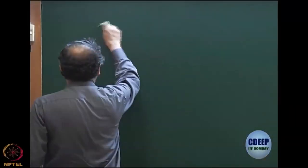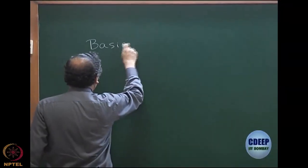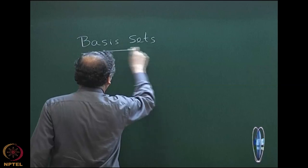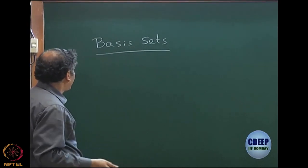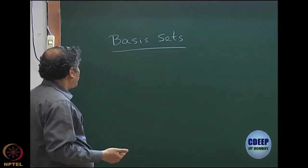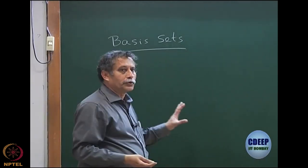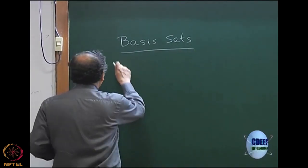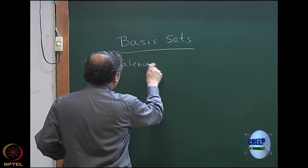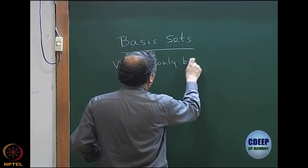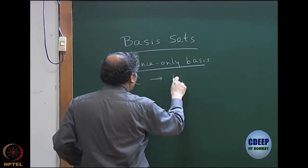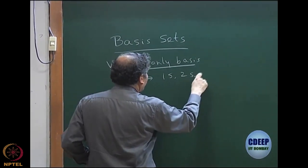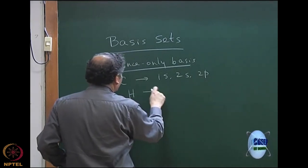We continue with the basis sets today. First, as we said in the last class, we have to choose the basis for the atomic orbitals. One of the very common bases is the valence-only basis, which essentially means for first-row atoms like carbon we have 1s, 2s, and 2p, and for hydrogen it is just 1s.